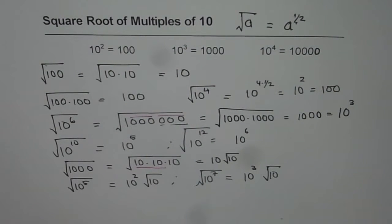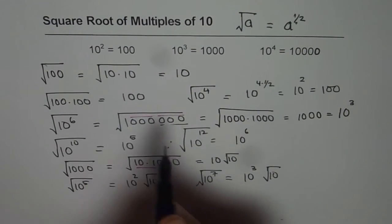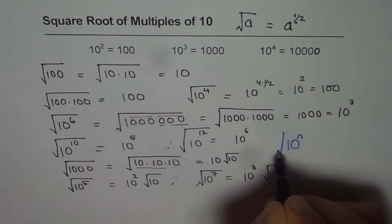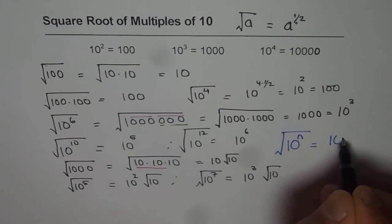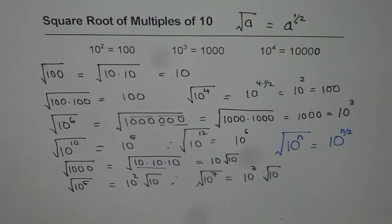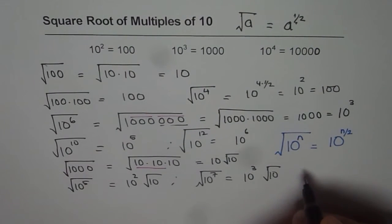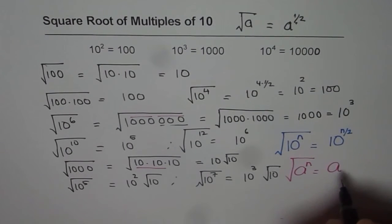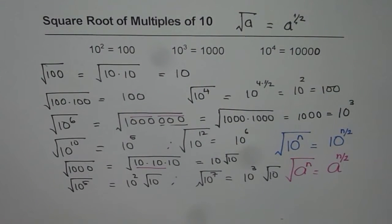So that is how you can find the square root of multiples of 10, and for that matter, the square root of any number given in exponent form. In general, if I have 10 to the power of n, then the square root equals 10 to the power of n divided by 2. Extending this further in general: if I have a to the power of n and I need to find the square root, then the answer is a to the power of n divided by 2.